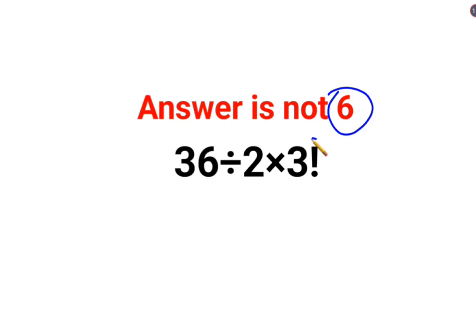The first thing is we have a 3 factorial. Whenever there is an exclamation mark ahead of a number, that means it's a factorial. It is not just 3. The value of this is 3 multiplied by 2 multiplied by 1.